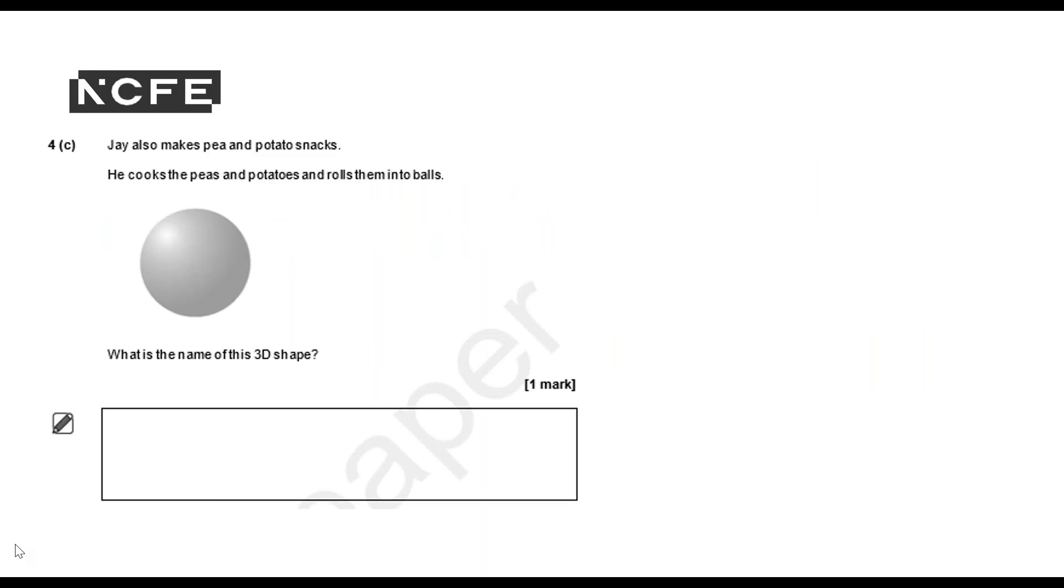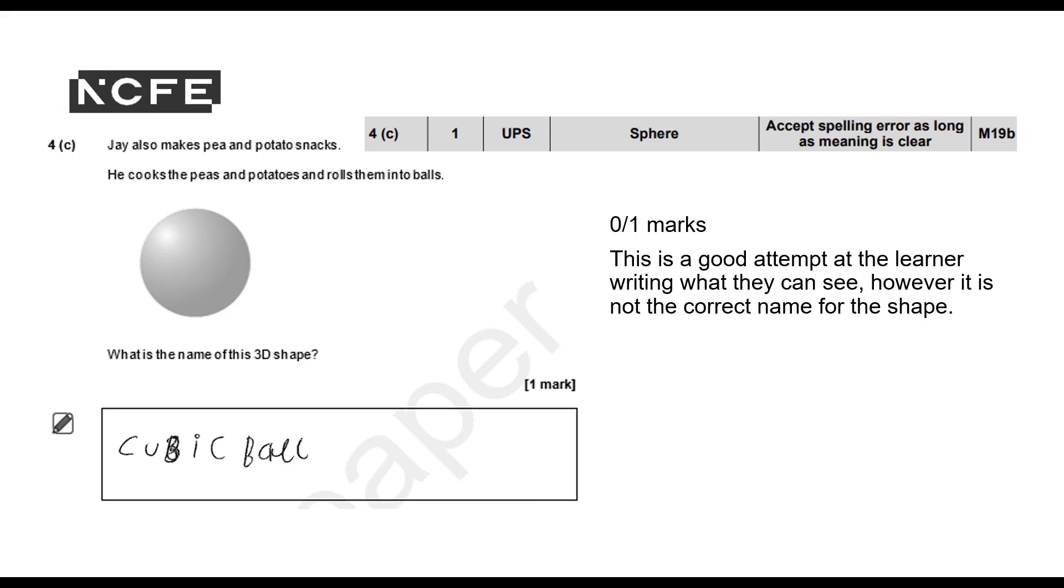For C: Jay also makes pea and potato snacks. He cooks the peas and potatoes and rolls them into balls. What is the name of this 3D shape? And here's our learner response. How many marks would you award here? I'll show that now.